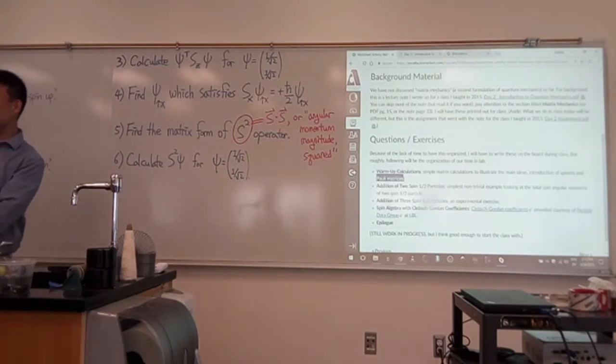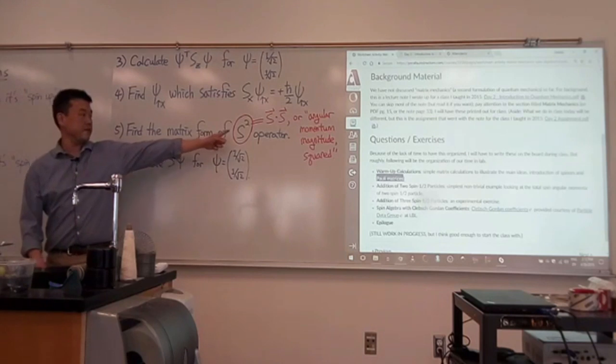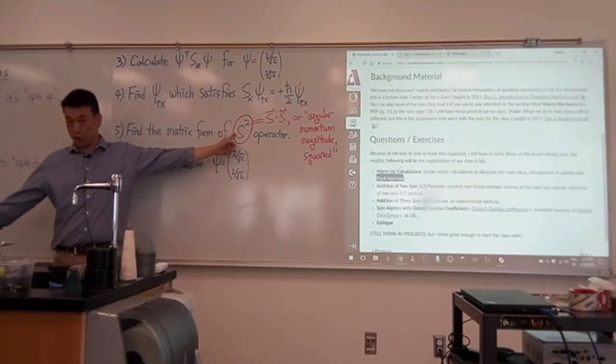One of the things that made me struggle the first semester of upper division quantum mechanics was I was seeing all these notations, and I wasn't quite sure what they meant. So it's good that you are questioning the notation. So you are given this S, you are asked to find the matrix form of S squared operator.